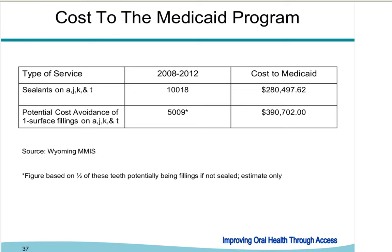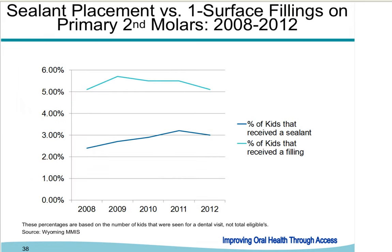We estimated potential cost avoidance of one-surface fillings on these teeth. Using a 50% assumption — that half of unsealed teeth might have needed a one-surface filling at $78 reimbursement — the cost would have been approximately $390,000. If we have avoided fillings on at least half of those teeth, we believe this benefits our program with cost avoidance and better oral health for our children. We are also beginning to see a decline in the number of one-surface fillings being done on these teeth A, J, K, and T.